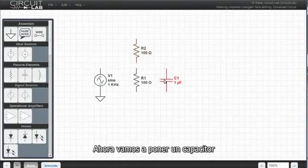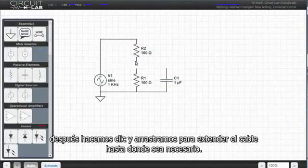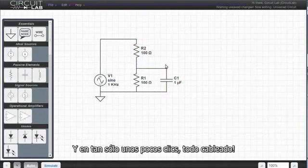Now let's put a capacitor in. So to wire these elements up, you can just put your mouse over any of the terminals, and click and drag to extend a wire out to wherever you want. And in just a few clicks, it's all wired up.